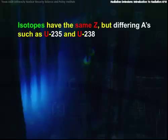As we've seen, isotopes have the same Z, but differing A's. U235 and U238 are isotopes.